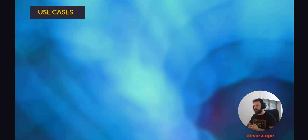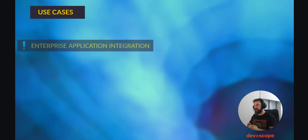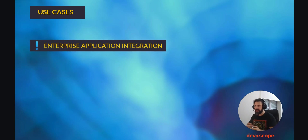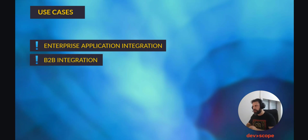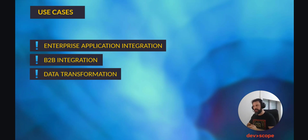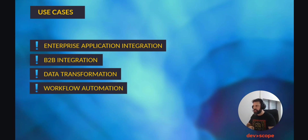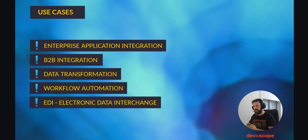Use Cases. BizTalk is commonly used in scenarios like Enterprise Application Integration — integrating various applications and systems to ensure seamless data flow and process automation. B2B, or business-to-business integration — connecting with external partners, suppliers and customers to exchange data, orders and invoices. Data transformation — converting data between different formats and standards to ensure compatibility between systems. Workflow automation — streamlining complex business processes involving multiple steps, systems and decision points. And EDI, or electronic data interchange — facilitating the exchange of structured business documents between organizations.